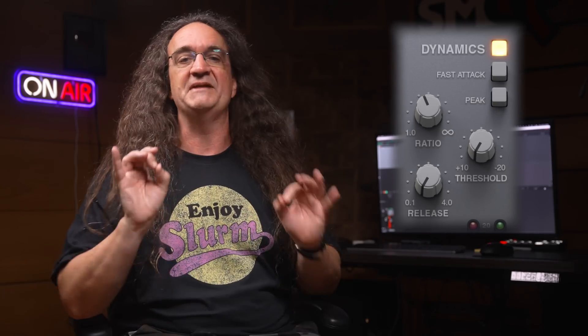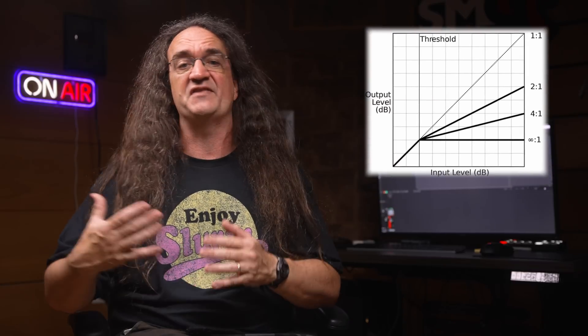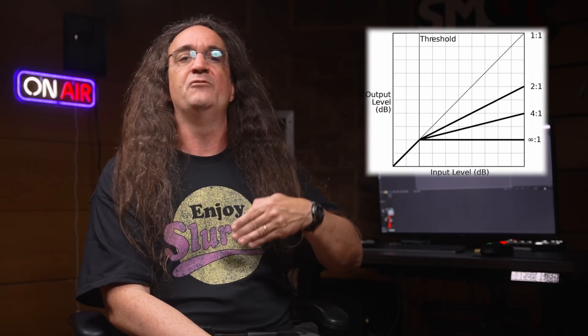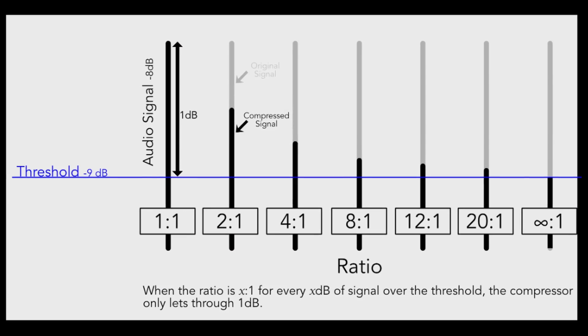Threshold means how loud a signal has to be before it's turned down. Attack is how fast it's turned down, and release is how fast it's put back to its zero point. Ratio means how many decibels something is allowed to cross the threshold. A 2:1 ratio means for every 2 dBs the signal goes past the threshold, it will only be allowed to go up by 1. A 4:1 means every 4 dBs it only goes up by 1. A 10:1 means it'll take 10 dBs past the threshold to go up by 1 dB. This is an aggressive style of compression known as limiting.